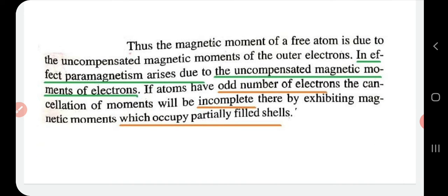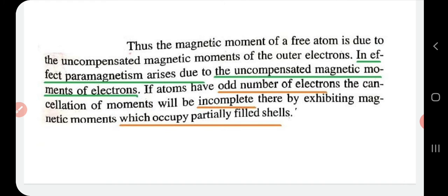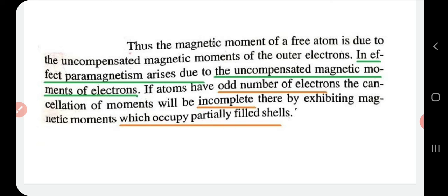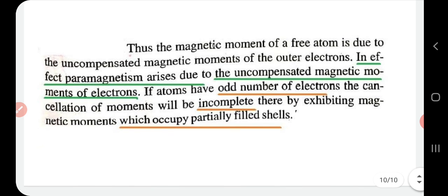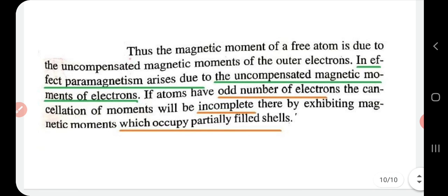In short, the magnetic moment of a free atom is due to the uncompensated magnetic moment of the outer electrons. Paramagnetism arises due to the uncompensated magnetic moment of electrons. If atoms have an odd number of electrons, cancellation of moments will be incomplete and they will exhibit net magnetic moments. So paramagnetism is mainly exhibited by atoms with an odd number of electrons, and that's all for today — in the next class we will study the other types of magnetism.